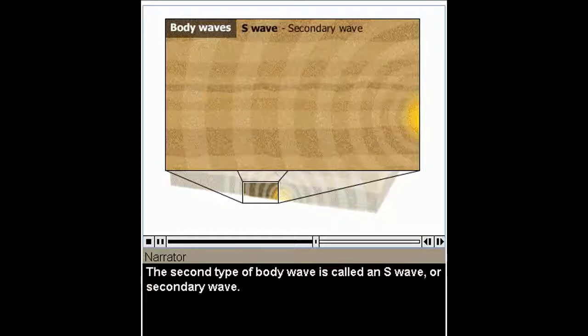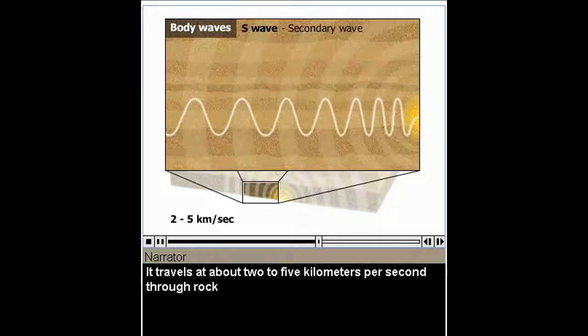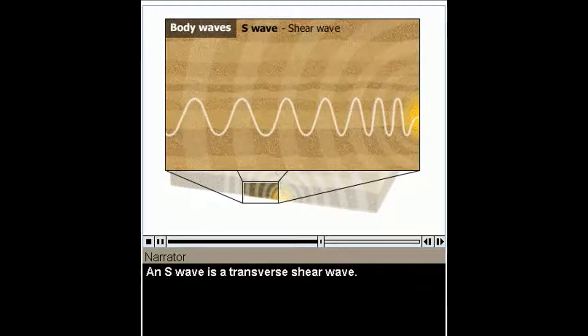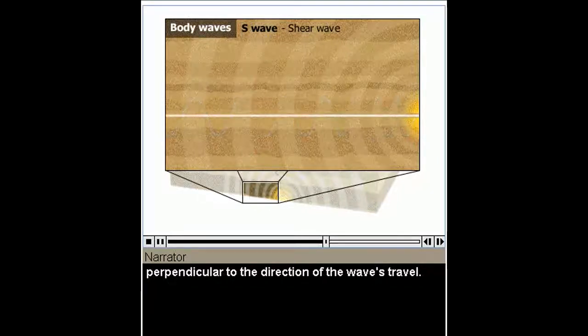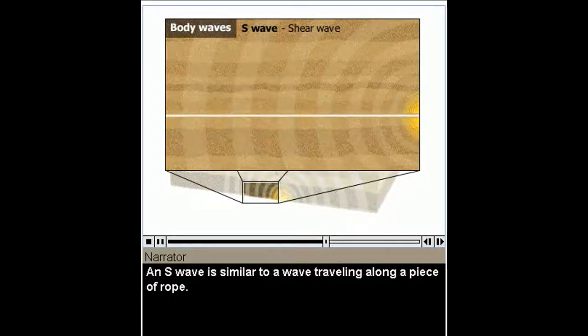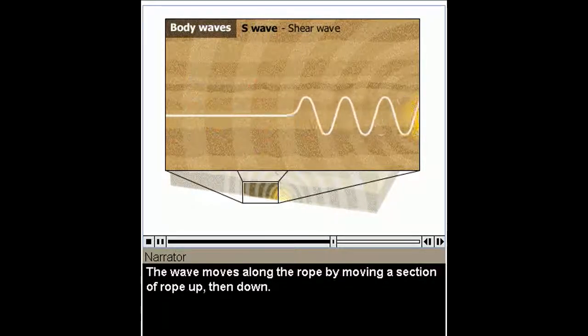The second type of body wave is called an S wave, or secondary wave. It travels at about 2 to 5 kilometers per second through rock, about half the speed of a P wave. An S wave is a transverse shear wave. Rocky material in its path moves up and down, or side to side, perpendicular to the direction of the wave's travel. An S wave is similar to a wave traveling along a piece of rope. The wave moves along the rope by moving a section of the rope up, then down.